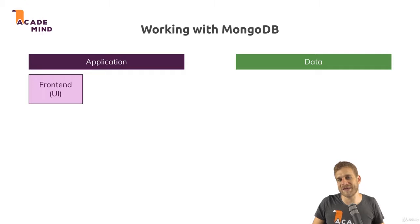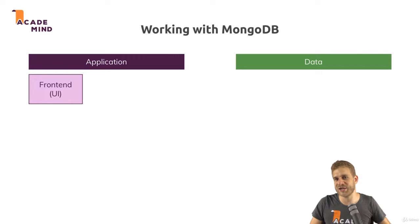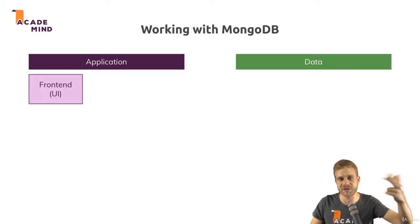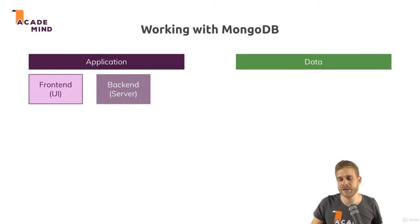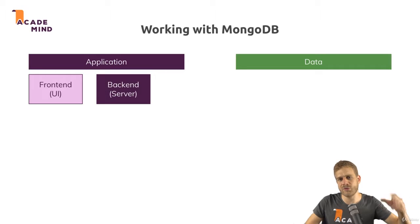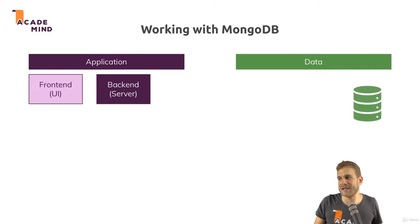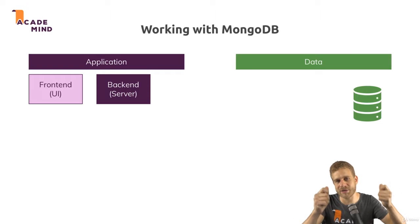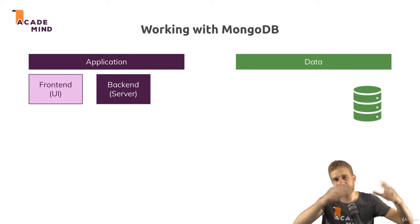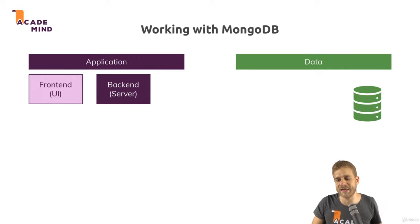In your application you will have some frontend — that can be a single page application, that can be a mobile app, that can be the views your Laravel or your Node app renders. You'll then have a backend, your server, where you have your server-side logic, and then you have your data layer — the database, the data storage, the files on a file system which hold your data in the end.